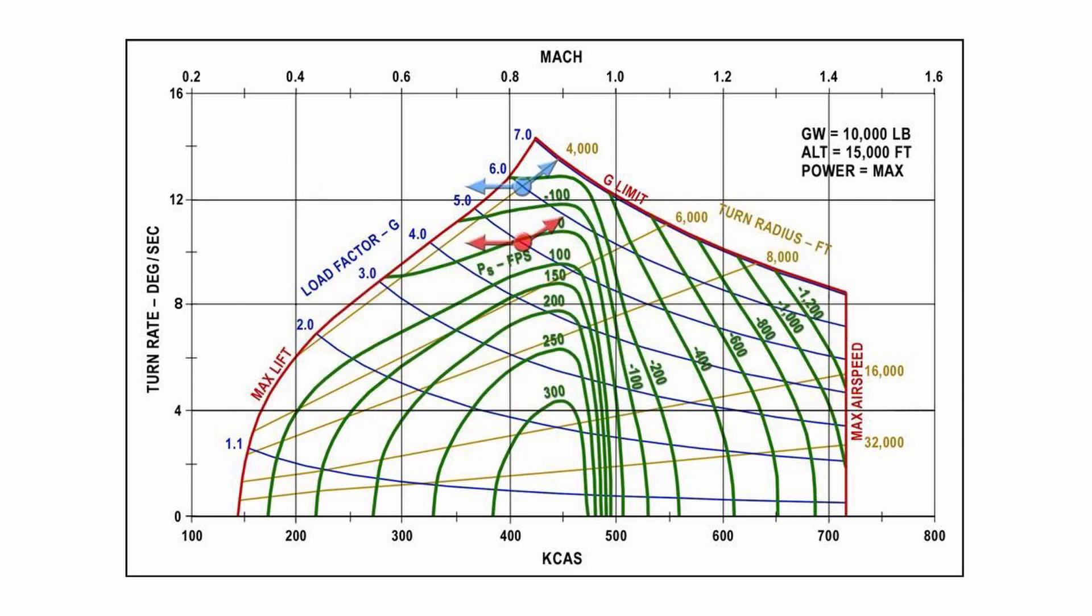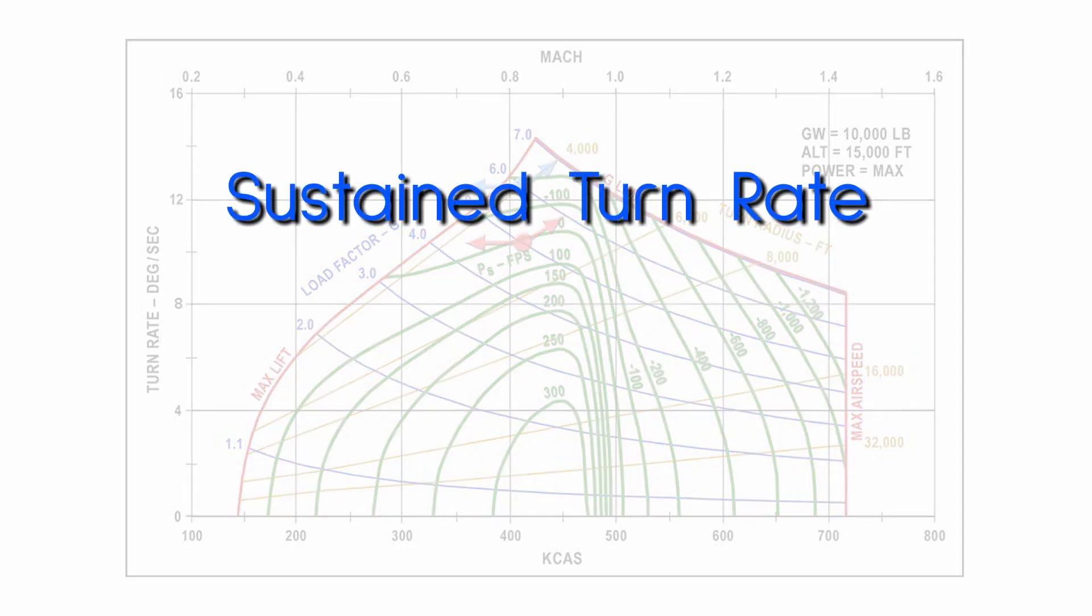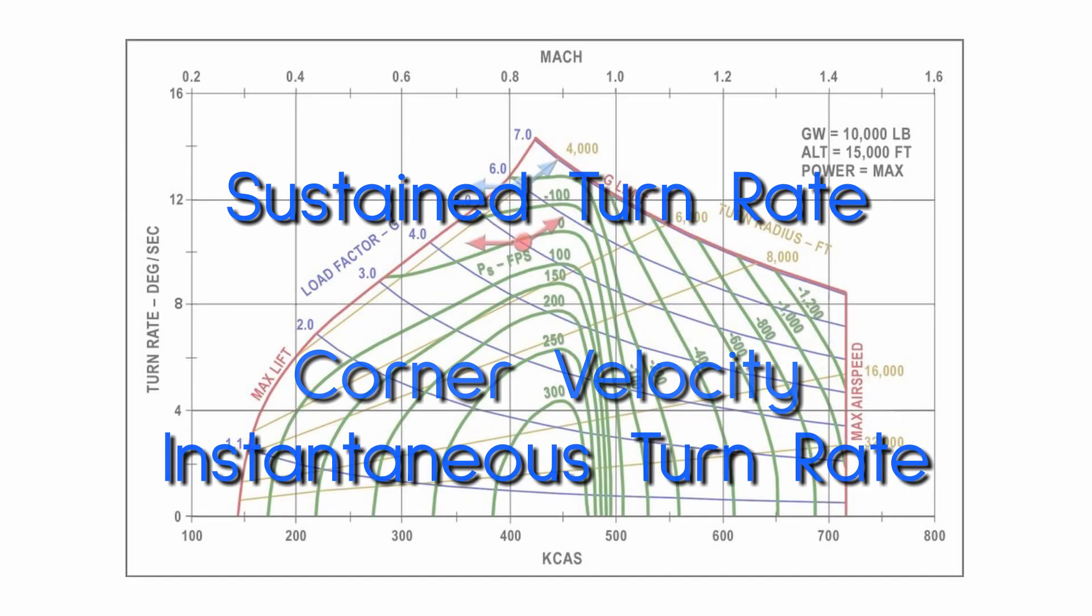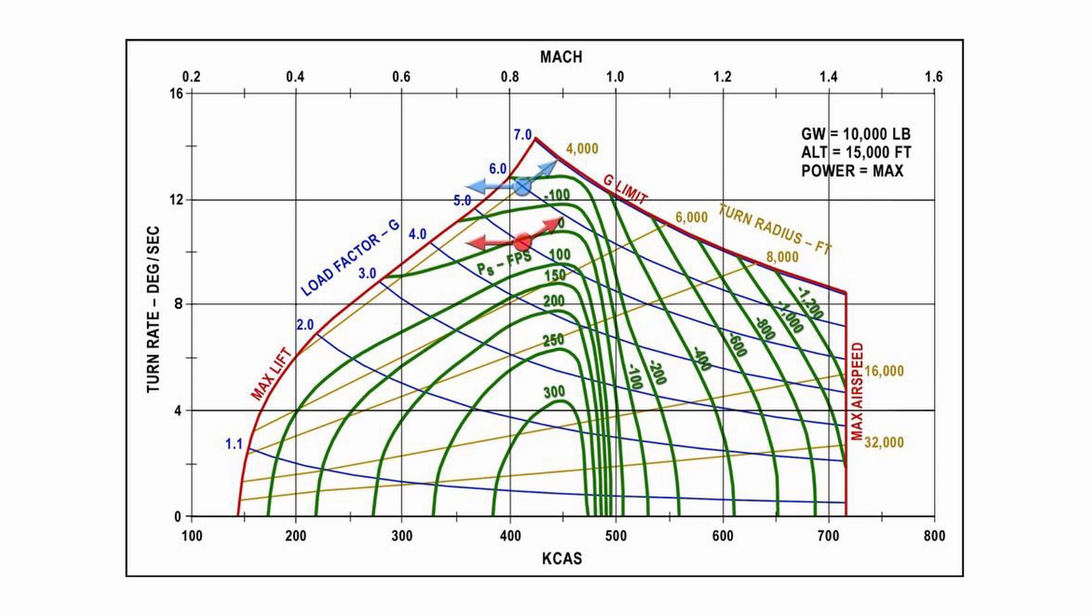There are two points on this chart that you'll hear people talk about when it comes to maximum performance. One of them is the sustained turn rate. The other is the corner velocity, which is also called the instantaneous turn rate. The easiest one to define is the corner velocity. On any EM chart it will be this point at the top where the lift limit and the g-limit meet. This is where the airframe physically cannot produce any more turn rate. You get this maximum rate by flying at the speed listed under the peak and then turning with as much g as you can pull out of the jet. This rate is called instant because it can't be held for very long, and that's because the peak is above the zero power line.